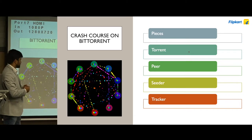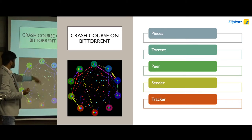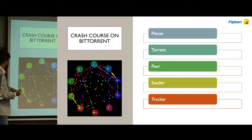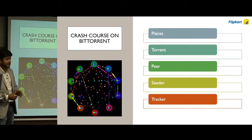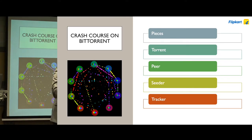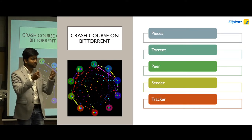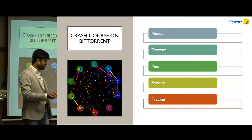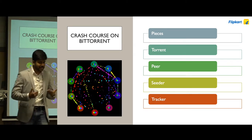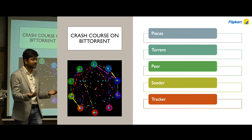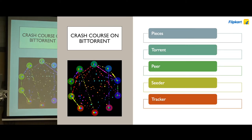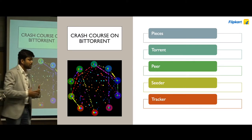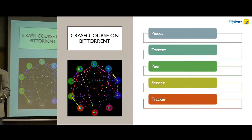Every machine participating in a particular torrent download is called a peer. There's a special term for the node that has all pieces of a file — that's called a seeder. A seeder is very important: when beginning a download, you need at least one seeder so the file can be reconstructed across all clients. Once a client gets all the pieces, it also becomes a seeder, so there can be multiple seeders and peers in a torrent network. As was mentioned, it works on a tit-for-tat principle — the more you upload pieces to other clients, the more you can download as well.